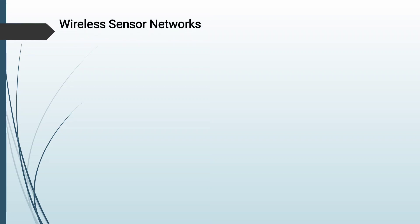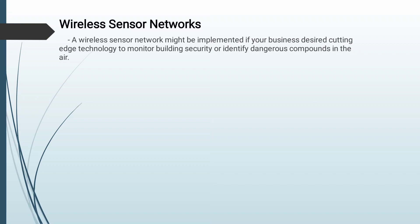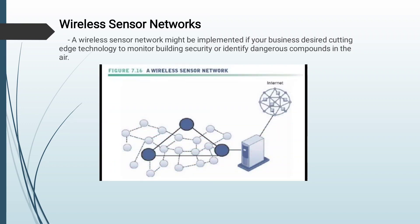Wireless sensor networks: A wireless sensor network might be implemented if your business desires cutting-edge technology to monitor building security or identify dangerous compounds in the air. Wireless sensor networks are networks of interconnected wireless sensors embedded into physical environments, giving measurements of numerous sites over wide areas. These devices include processing, storage, antennas, and radio frequency sensors. They are connected by a network which sends the data they collect to a computer for analysis, with hundreds to thousands of nodes in these networks.